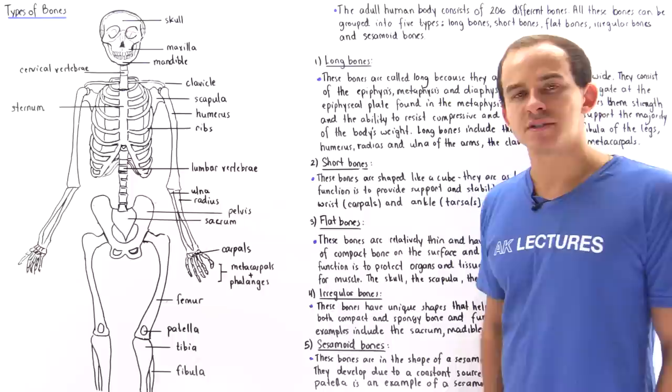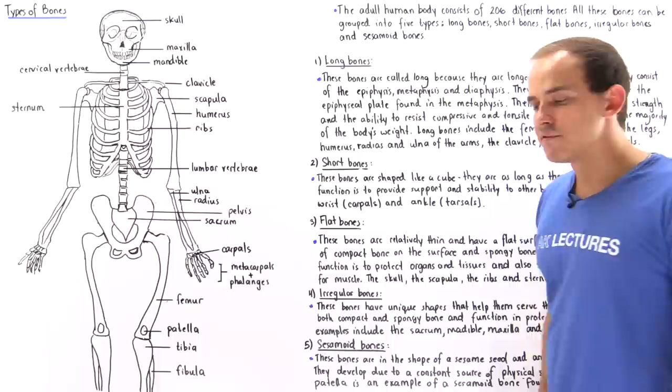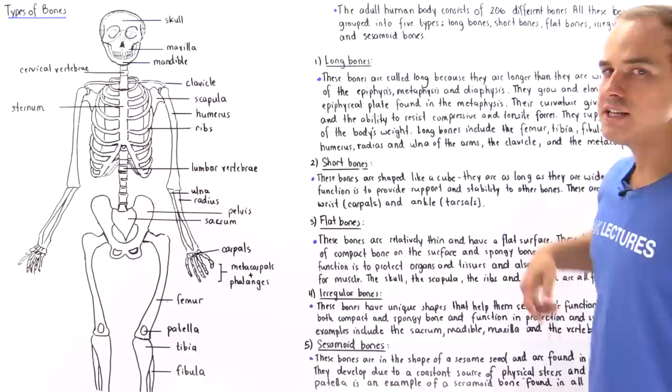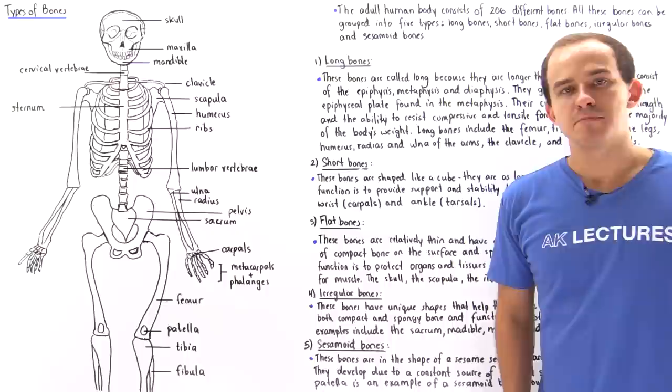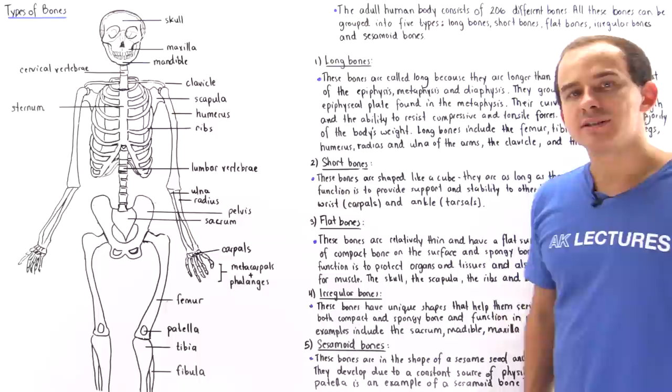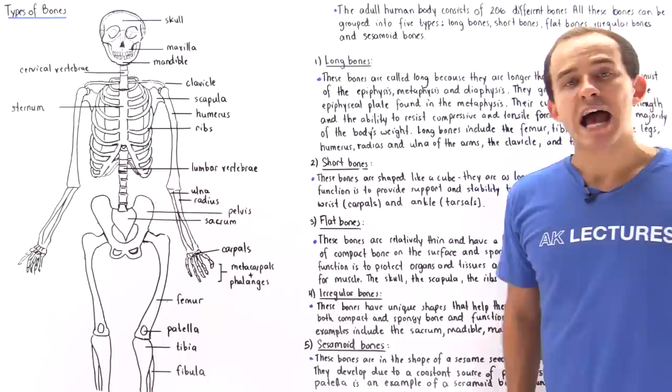The metaphysis consists of an important section known as the epiphyseal plate, which is responsible for lengthening and elongating the long bone as the human grows. The diaphysis is the long shaft that contains compact bone, which is responsible for giving the bone its strength.